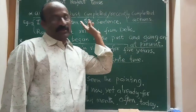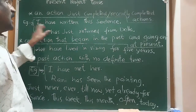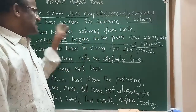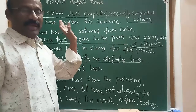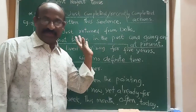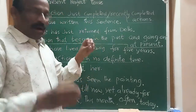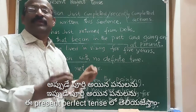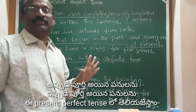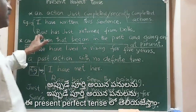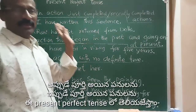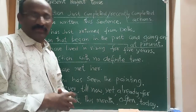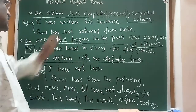The first use: an action just completed or recently completed. For example, you can say 'I have just written this sentence.' Here the word 'just' is used and the time is not mentioned. As another example: 'Rani has just written from Delhi' — so time and place are not given, just the recently completed action.